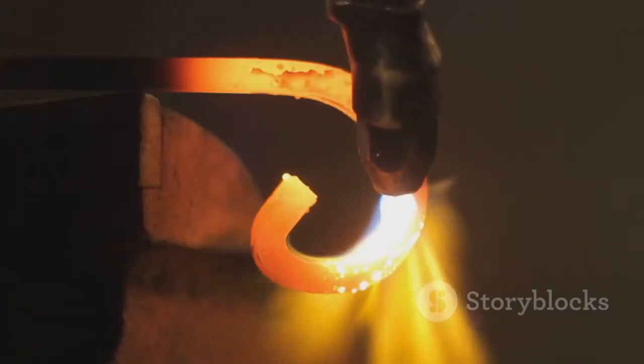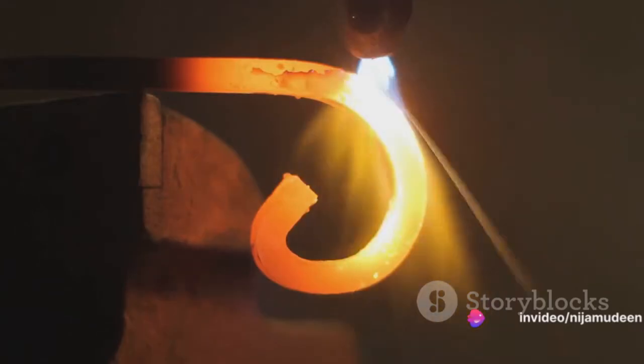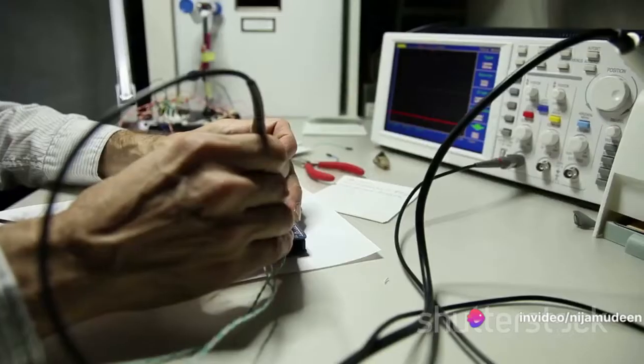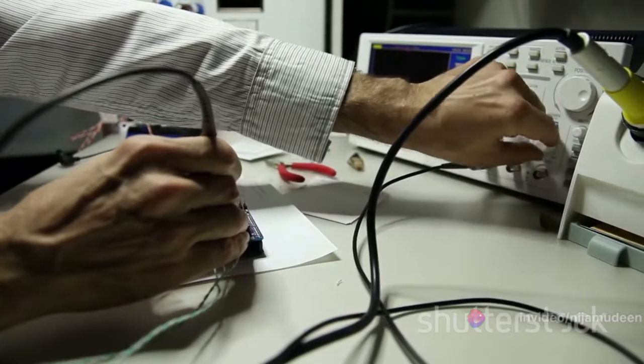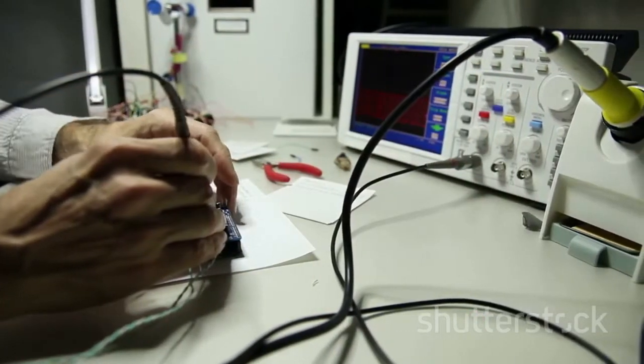They work on the principle that certain metals, such as platinum, increase their resistance as temperature rises. By passing a current through these metals and observing the resulting resistance, we can derive accurate temperature measurements.